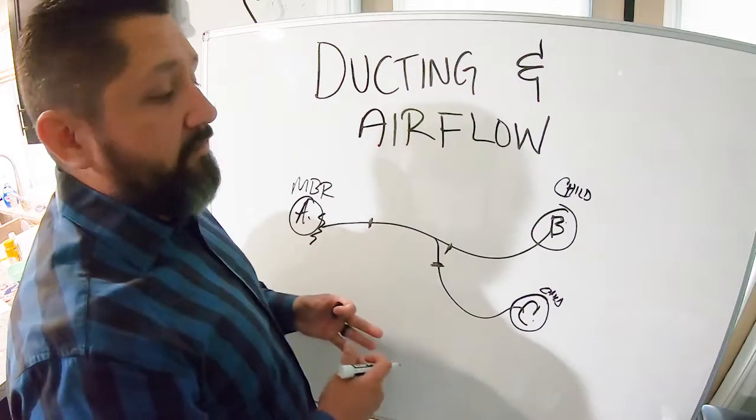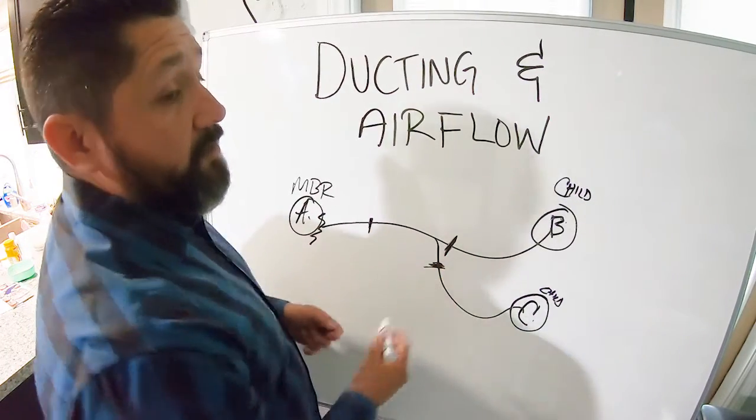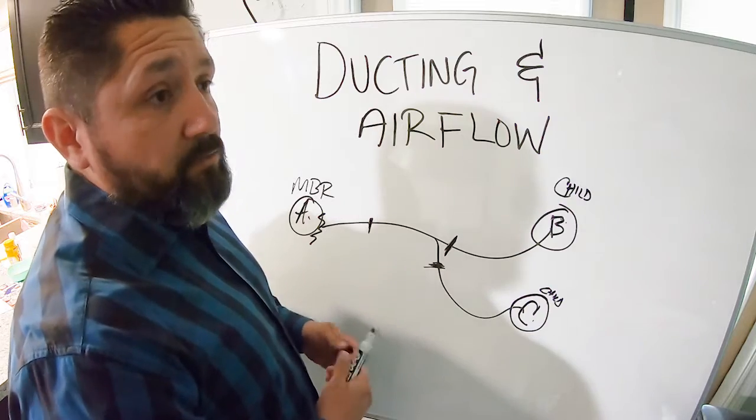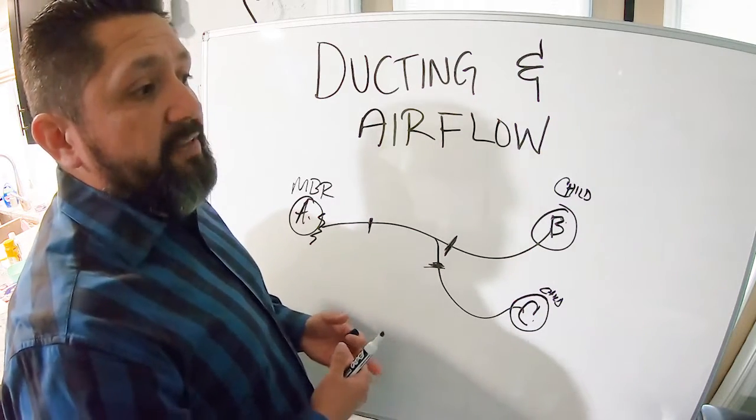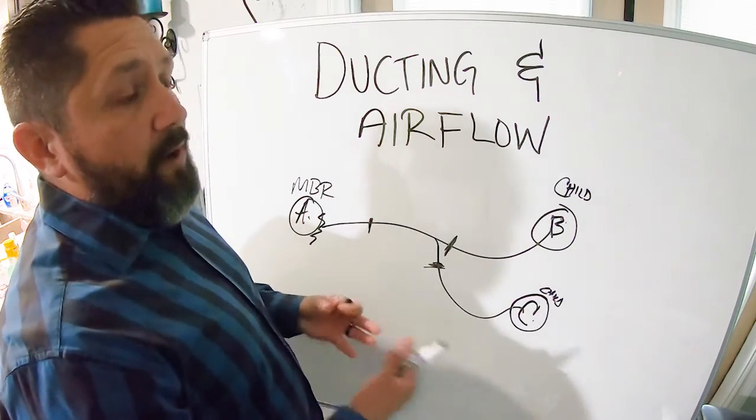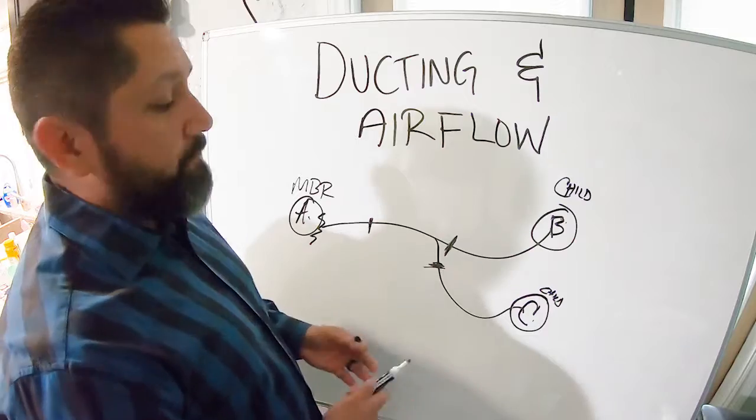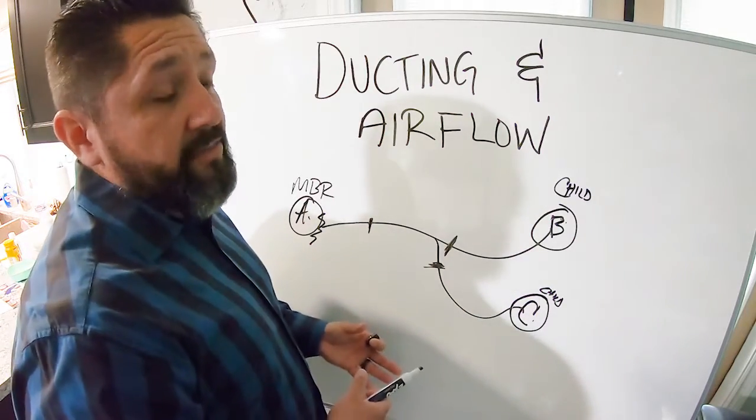But you know, 80% of homes do not have these dampers installed. Why? Because it's not required. It's not a code, it's not required. It's something that's added onto a system. So when we talk about why does it cost so much to do this or do that, it's all these little things that homes do not come with.